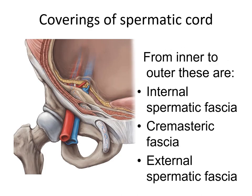The Spermatic Cord is covered by three concentric layers of fascia derived from layers of the anterior abdominal wall as it travels through the inguinal canal. This is the deep inguinal ring, which is present in the fascia transversalis, and this is the superficial inguinal ring, which is present in the external oblique aponeurosis. The content we are seeing is the Spermatic Cord, which derives its three fasciae as it travels through the inguinal canal.